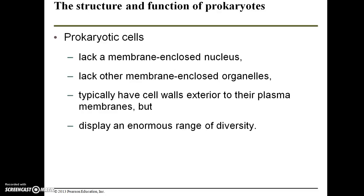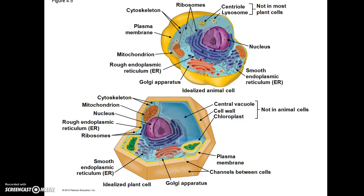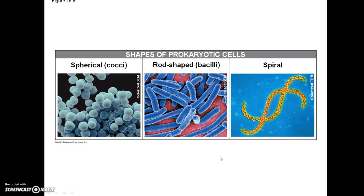Prokaryotes display an enormous range of diversity. Here we have an idealized plant cell and an idealized animal cell — both eukaryotic cells, which are much more complex. They have true membrane-bound nuclei and true organelles. Prokaryotic cells are much simpler, and these are a few of the common shapes: spherical, rod-shaped, and spiral prokaryotic cells.